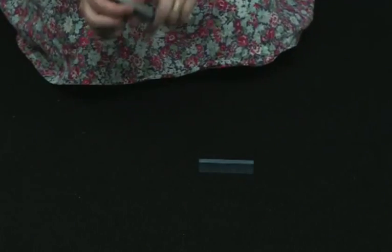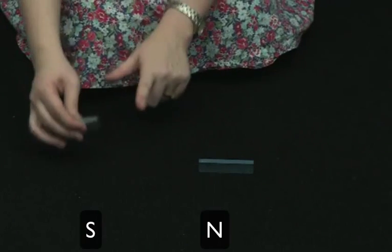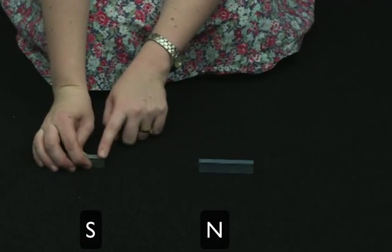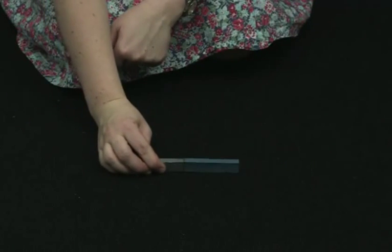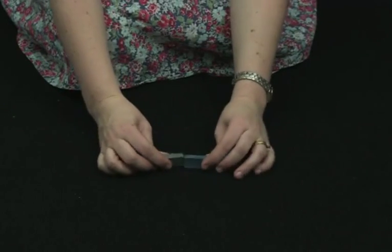Now this is the south pole of this magnet. Let's try bringing the south pole of this magnet towards the north pole of this magnet. You can see in this case they attract each other.